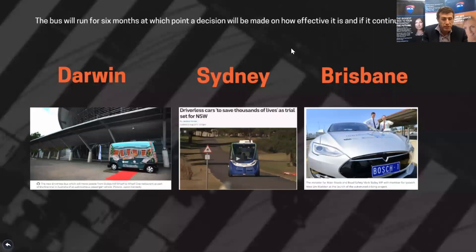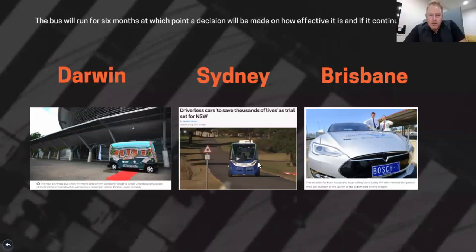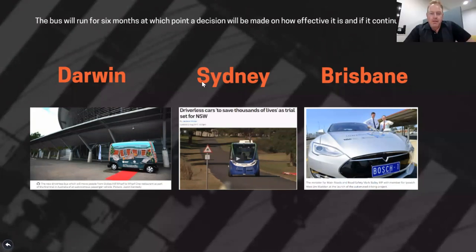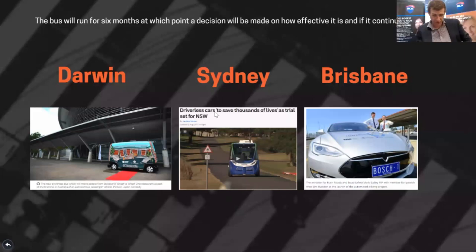Sharing the results with everyone — interesting that nobody has mentioned number five: faster zero to a hundred acceleration. I thought that's probably the best feature of a driverless car. That's great — it's just nice to see where everyone's head space is at. We'll have another poll shortly.